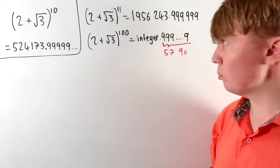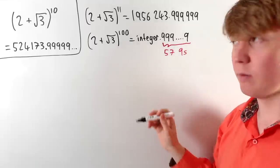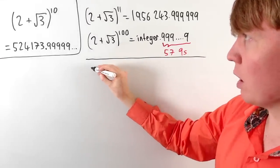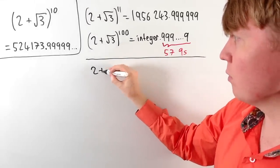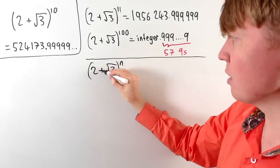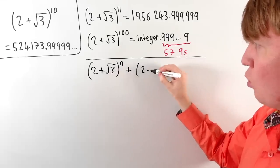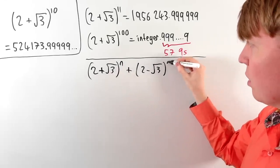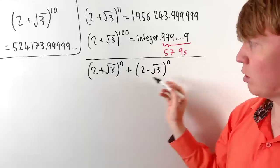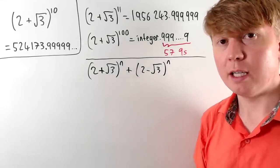So why is this? We've always got something like 0.99999, where we seem to be missing something to make this an integer. What we're really missing is: thinking of this as (2 plus root 3) to the power of n, what we're missing is (2 minus root 3) to the power of n. The big idea is that when we expand both of these brackets and add them together, we're actually going to get an integer.